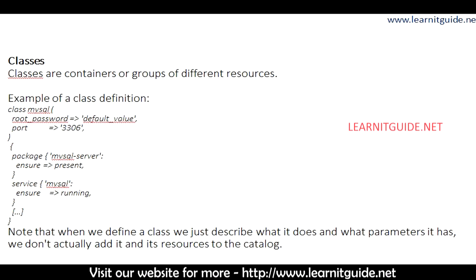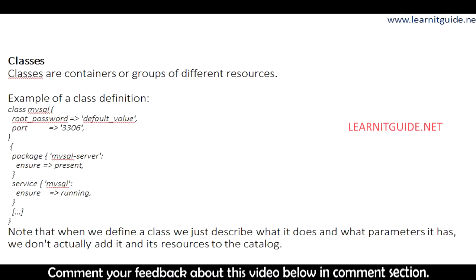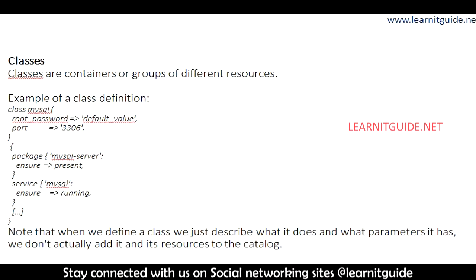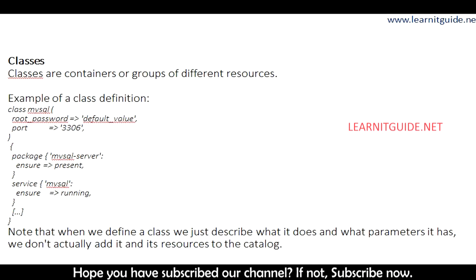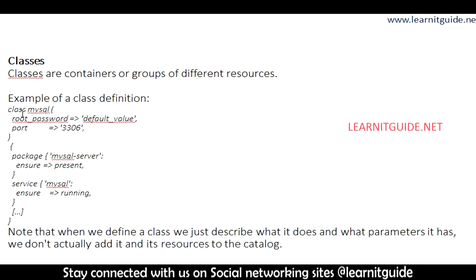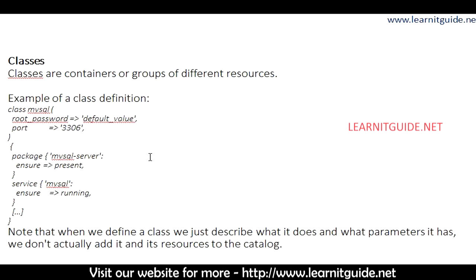One more component is classes. Classes are containers or groups of different resources. For example, if you want to perform changes related to MySQL, associated with MySQL you'll have multiple resource checks — first check whether the package type exists, then check whether the service is running. These multiple types associated with a single class form a container or group of multiple resource types.